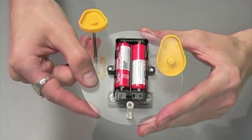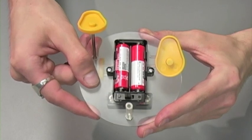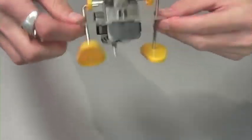For step 8, insert your two AA batteries. And now your robot is complete.